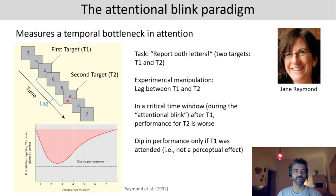Now what you can see here is the performance for T2 as a function of how many items were between T1 and T2, the lag. And as you can see when T2 is presented right after T1 the performance is relatively good. But at lag 2 and 3 the performance is very bad. So this is what we call the attentional blink.